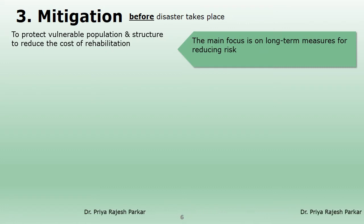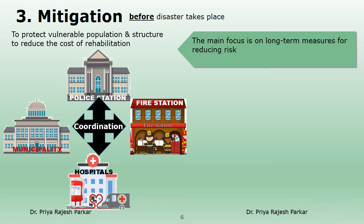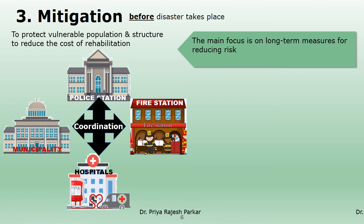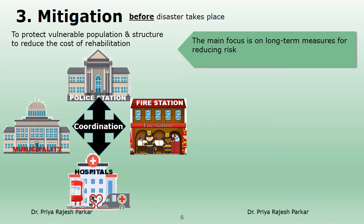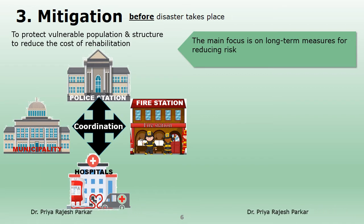Disaster mitigation is the third phase, which occurs before the disaster takes place. It is the most important phase. The main focus of mitigation activity is implementing long-term measures for protection against the risk of possible disasters. In the mitigation phase, actions are taken in advance to reduce disaster risk by analysing risk and ensuring against risk before the next disaster. Safety measures are undertaken to minimize losses and to reduce the cost of rehabilitation and reconstruction.